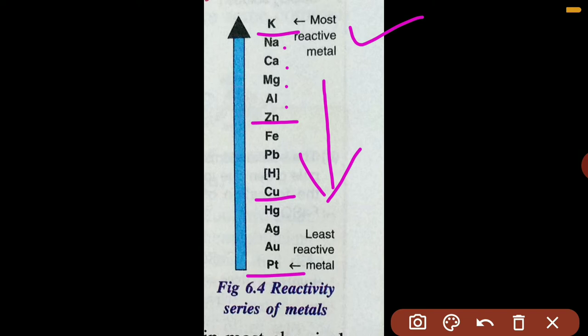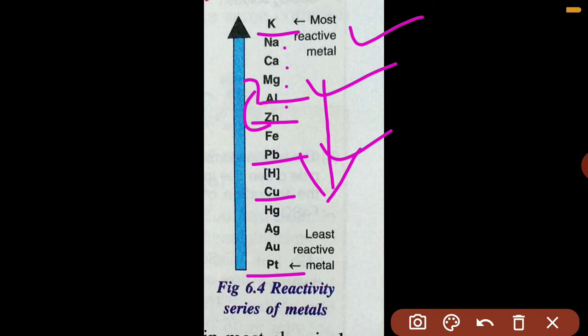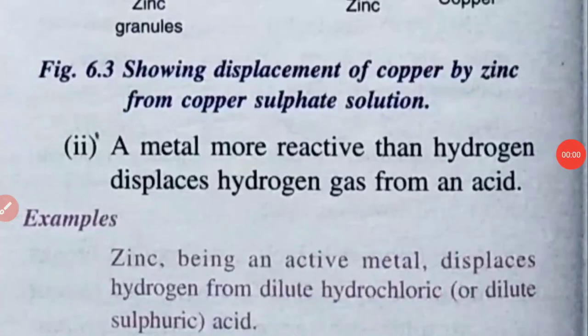I hope you understood the list. For example, aluminum is above lead, so aluminum can displace lead. But zinc cannot displace magnesium because magnesium is above zinc; however, magnesium can displace zinc. Anyone higher on the list can displace elements below it but not above it. There will also be a reactivity series for non-metals.